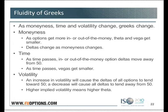How about volatility? An increase in volatility will cause the deltas of all options to tend towards 50. A decrease in volatility will cause the deltas to tend away from 50. Higher implied volatility means higher theta. There's a whole bunch of other little quirks like this that need to be discussed to really run the gamut — just a couple ideas to keep in the back of your mind.